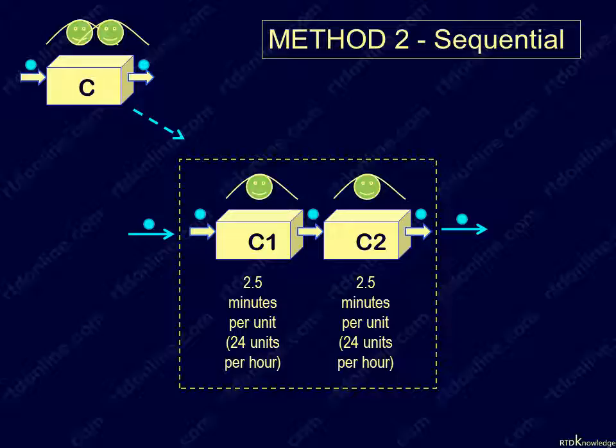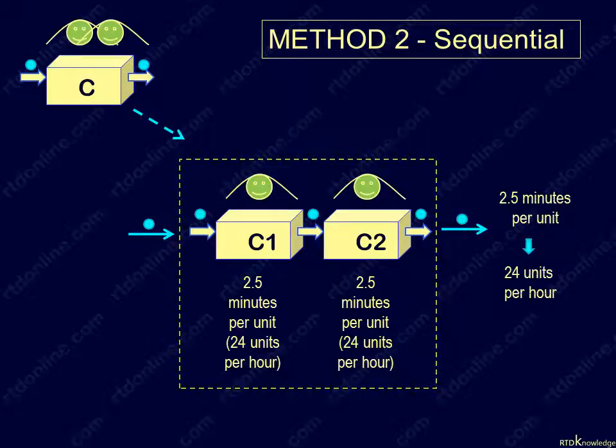Note that unlike the first method, the new station C here can accept only one unit at a time, but both C1 and C2 will always be busy working on one unit each. In other words, station C will now have two units inside at any time.